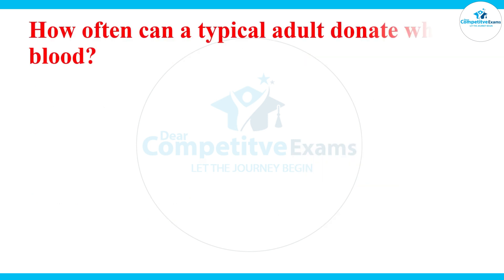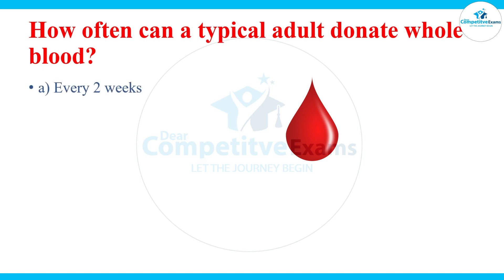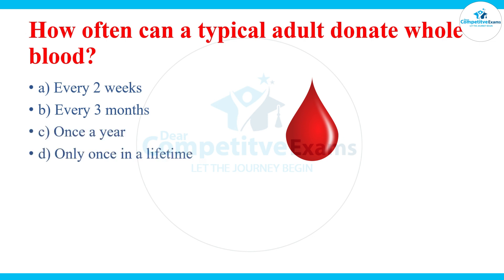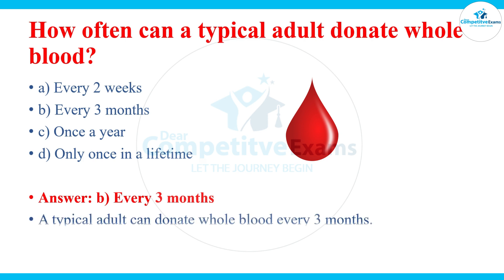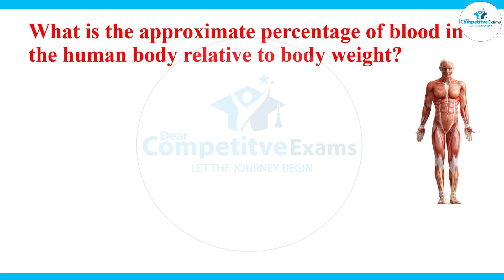How often can a typical adult donate whole blood? The options are every two weeks, every three months, once a year, or only once in a lifetime. The answer is every three months — a typical adult can donate whole blood every three months.